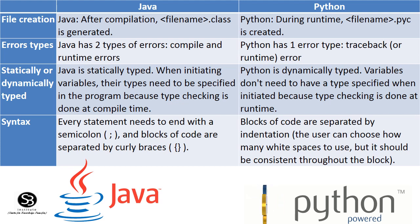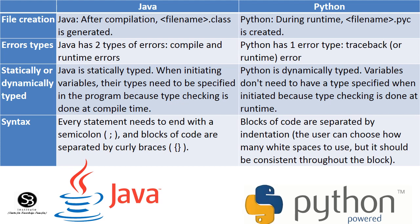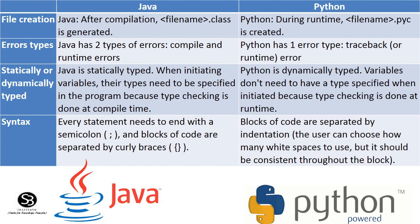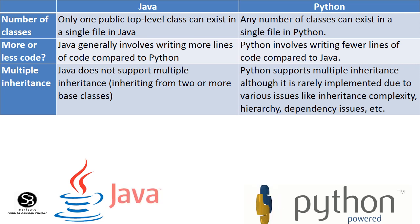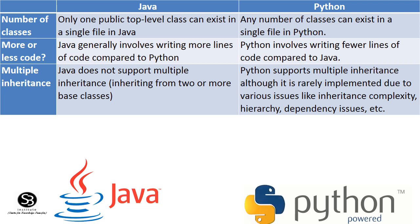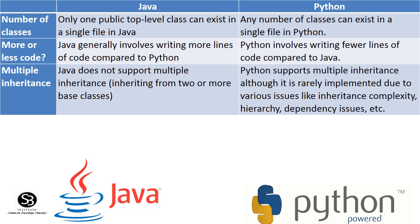Regarding syntax: Java uses curly braces to define blocks of code. Python uses the indentation process with white space. Regarding number of classes: in Java, only one class exists in a single file. In Python, any number of classes can exist in a single file. Python requires fewer lines of coding compared to Java.